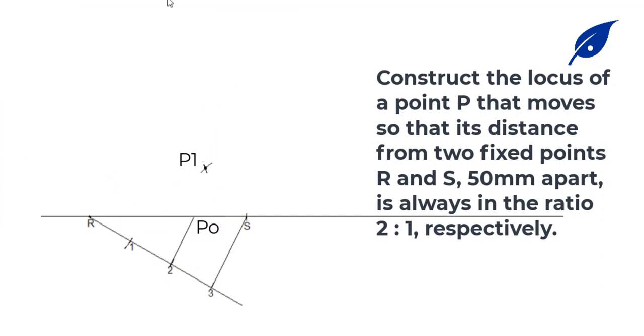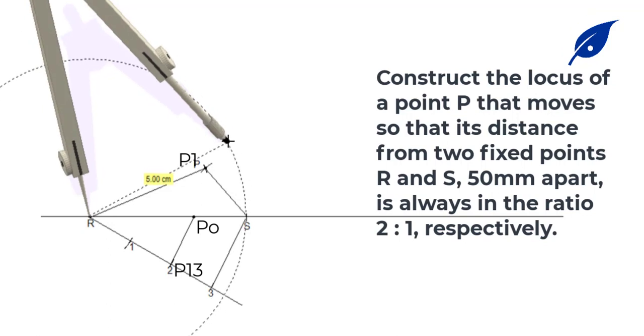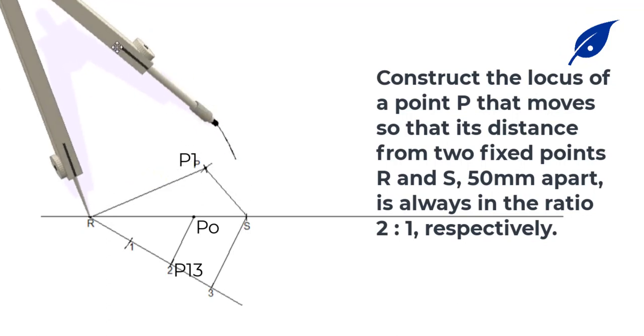It means half of that distance, which is 20, so PS is going to be 20. Now sample the second point where RP is going to be 50, so PS is going to be 25.